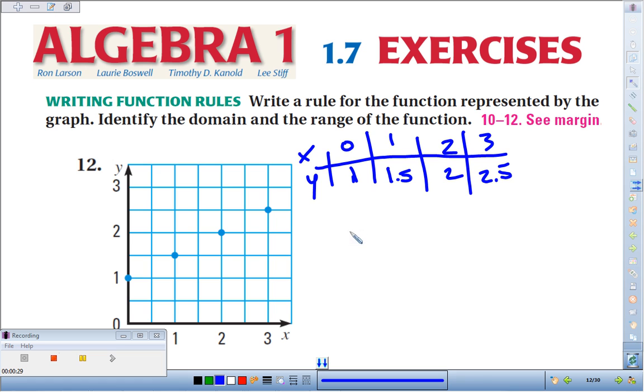Now I look for a relationship. You always want to look for the easy ones first, like adding or subtracting, multiplying, dividing. 0 plus 1 is 1, but 1 plus 1 is not 1 and 1 half. So I can't just add. Unfortunately, I can't just multiply either.